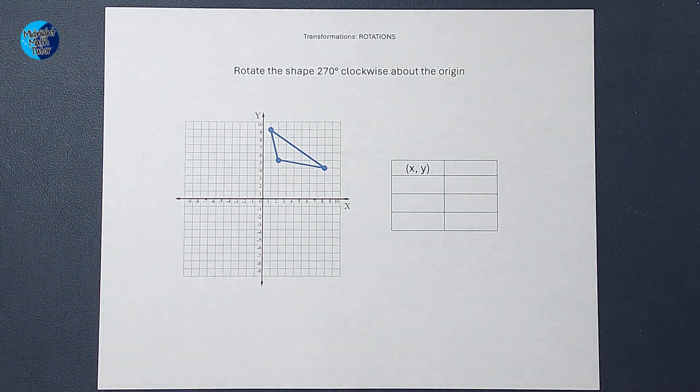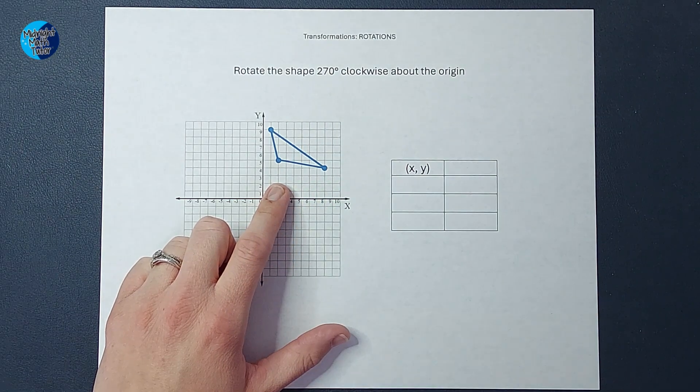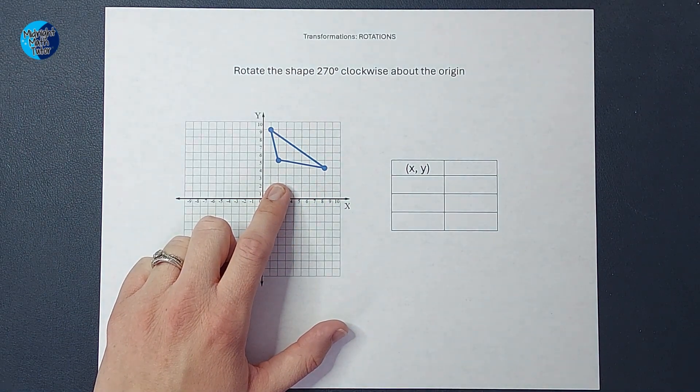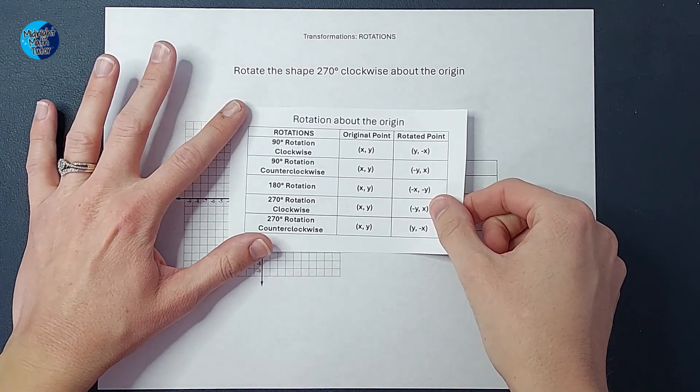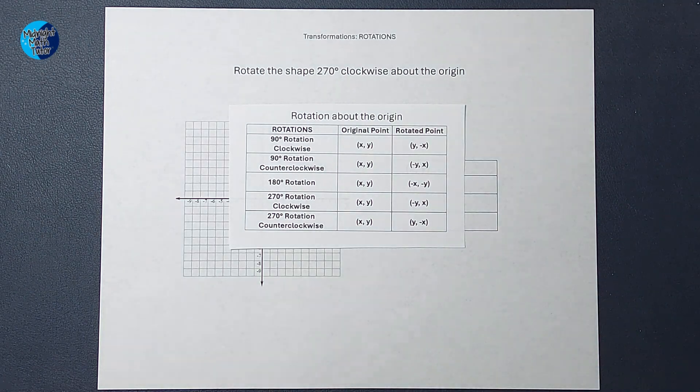Okay, in this one, we are going to rotate this shape 270 degrees clockwise about the origin. Now for this, we are going to use some rules. I'm also going to link another video for you in the corner that shows kind of why these rules work.